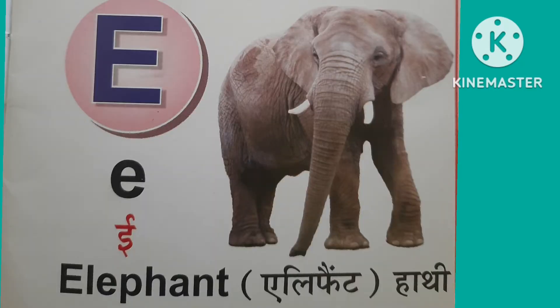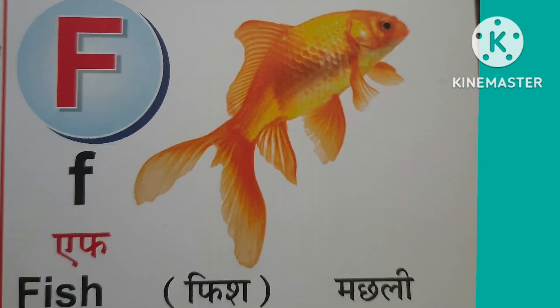E for elephant. Elephant means healthy. E for fish. Fish means machli. Machli jal ki rani hai.